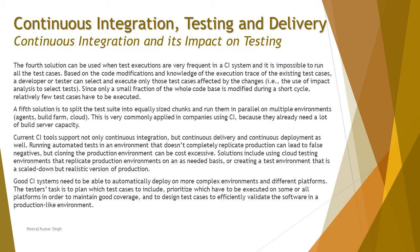The fourth solution can be used when test executions are very frequent in a CI system and it is impossible to run all test cases. Based on the code modification and knowledge of the execution trace of existing test cases, a developer or tester can select and execute only those test cases affected by the changes. Since only a small fraction of the codebase is modified during a short cycle, relatively few test cases need to be executed.